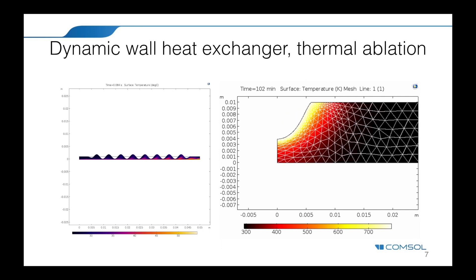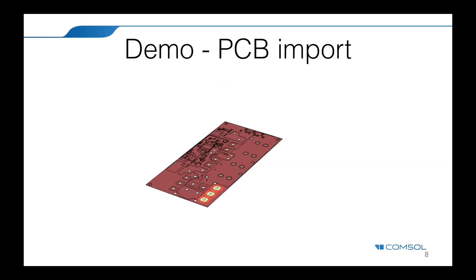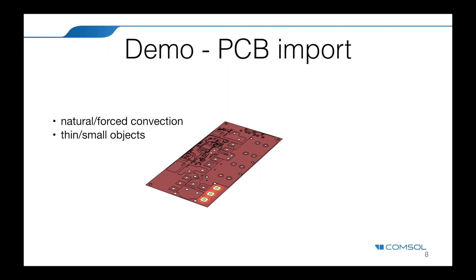What we are looking at today is importing a PCB — a printed circuit board — into our model. We would like to include the heat transfer from generated internal components and investigate several effects: whether it's natural or forced convection. You can also include thin and small objects without needing to mesh volume geometries; you can include surface or line elements instead.